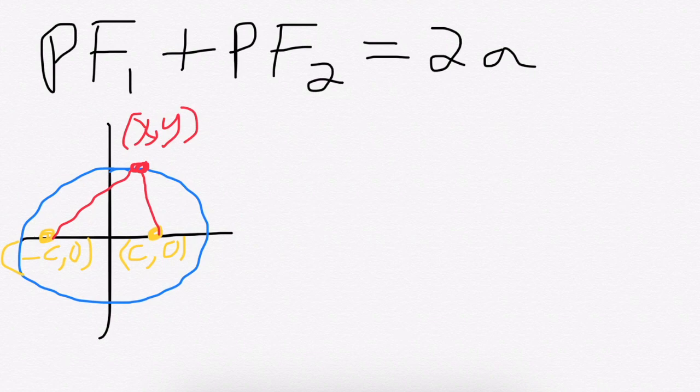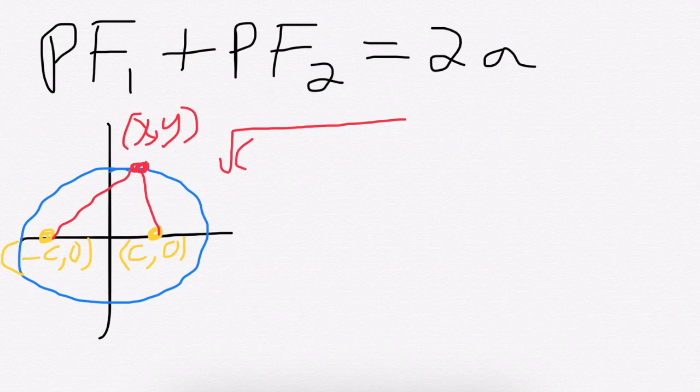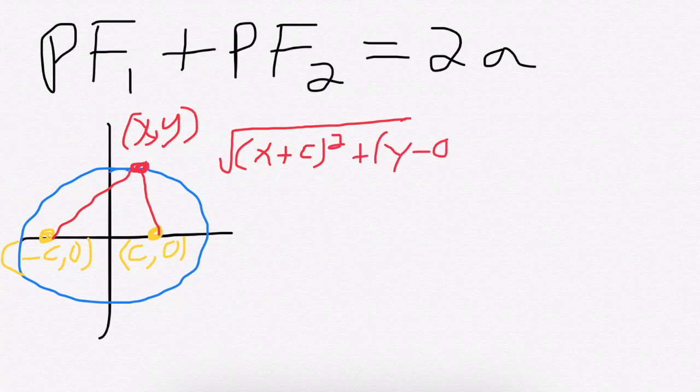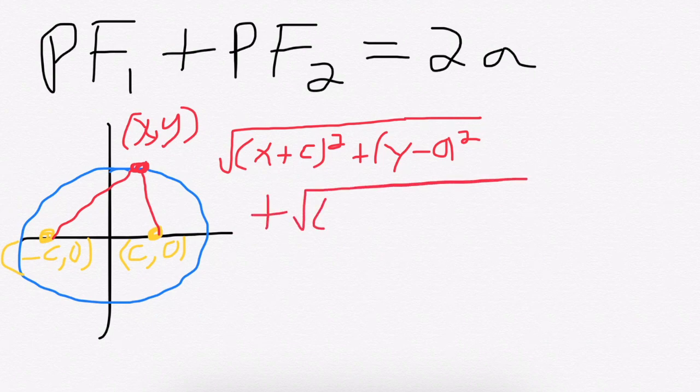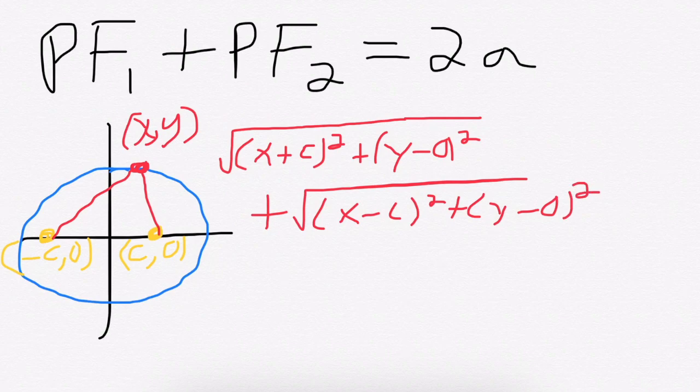We can set this equation up using the distance formula. So that first distance will be square root of x plus c squared plus y minus 0 squared. That's the distance from x, y to the first focal point, plus the distance from x to the other focal point should be equal to 2a.